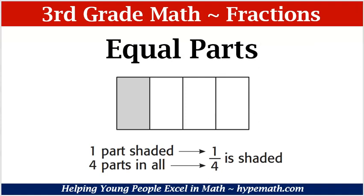Equal parts. We have a rectangle and there are four equal parts. There is one part that is shaded. So my fraction: the part that is shaded is in the numerator — the top number — and the total amount of parts, which is four, is in the denominator. So our fraction for the number of parts shaded is one-fourth.